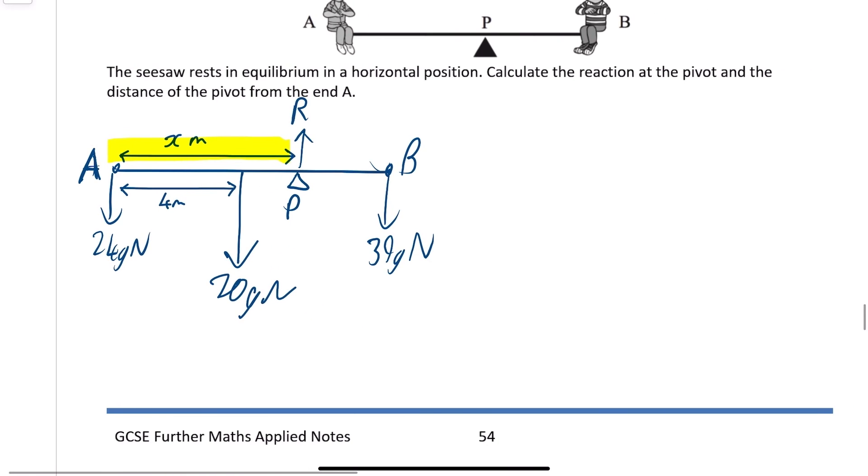The first thing is really easy for us to do. All we're going to do is resolve vertically. When I say resolve vertically, I'm saying forces up equal forces down. So R is the only force up, and that equals 24g plus 20g plus 39g. And that's going to work out to be, so 24 plus the 20 plus the 39, that's 83. And then multiply that by your g, which is 10. That gives you 830 Newtons.